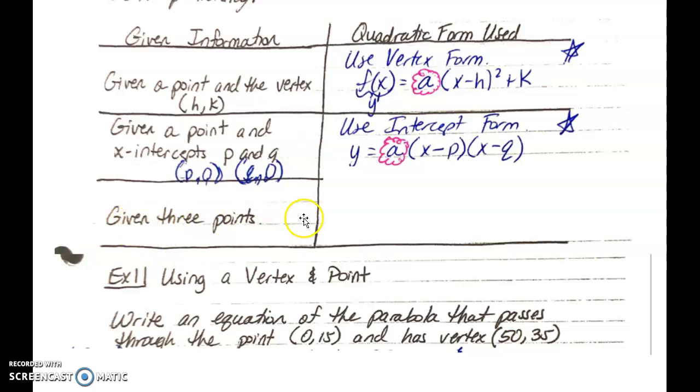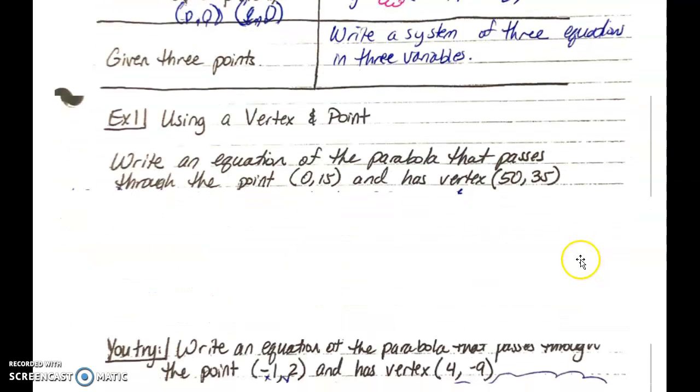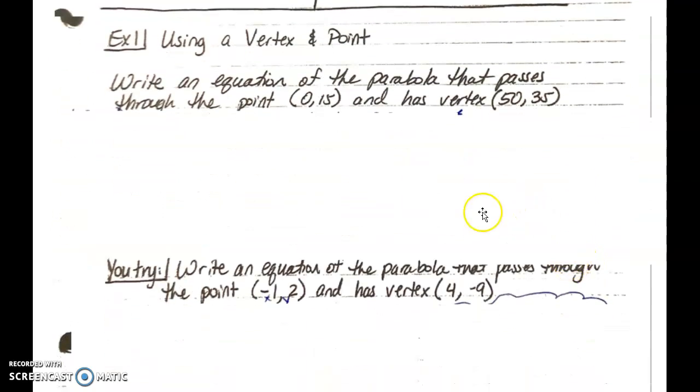And then you have given three points. Now, if you're given any three points on a parabola, this takes us back to chapter one, where we write a system of three equations in three variables. But we're not really going to be talking about given three points. We're really just focusing on given information and given the vertex and a point and then given x intercepts and a point.